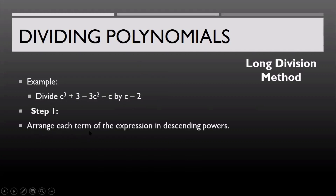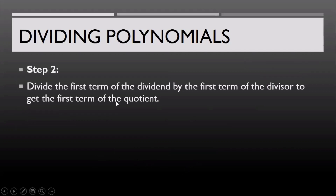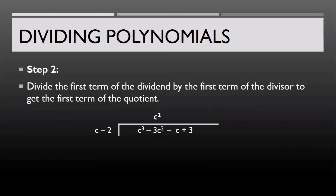For the first step, we have to arrange each term of the expression in descending powers. So we have the dividend and the divisor. We arrange the dividend in descending powers since in the given it's not arranged. For the second step, we divide the first term of the dividend by the first term of the divisor to get the first term of the quotient. So c raised to 3 divided by c gives us c squared, and we align the quotient with the same degree in the dividend.